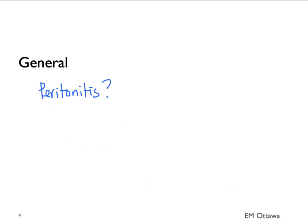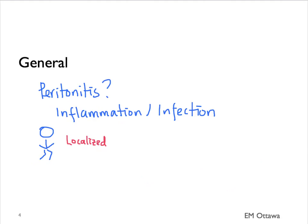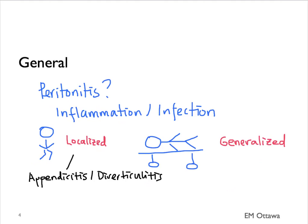Next, the general appearance of the patient. In particular, we would like to know if the patient is comfortable when they move — we're trying to elicit whether they have peritonitis. Peritonitis occurs after bacterial contamination and inflammation of the peritoneal lining. Patients with localized peritonitis will have difficulty walking, while those with generalized peritonitis tend to want to lie still on the stretcher without moving. Conditions causing localized peritonitis include appendicitis, diverticulitis, pancreatitis, and ischemic colitis. Once bacteria spreads to the generalized peritoneum, the patient will have generalized peritonitis signs.